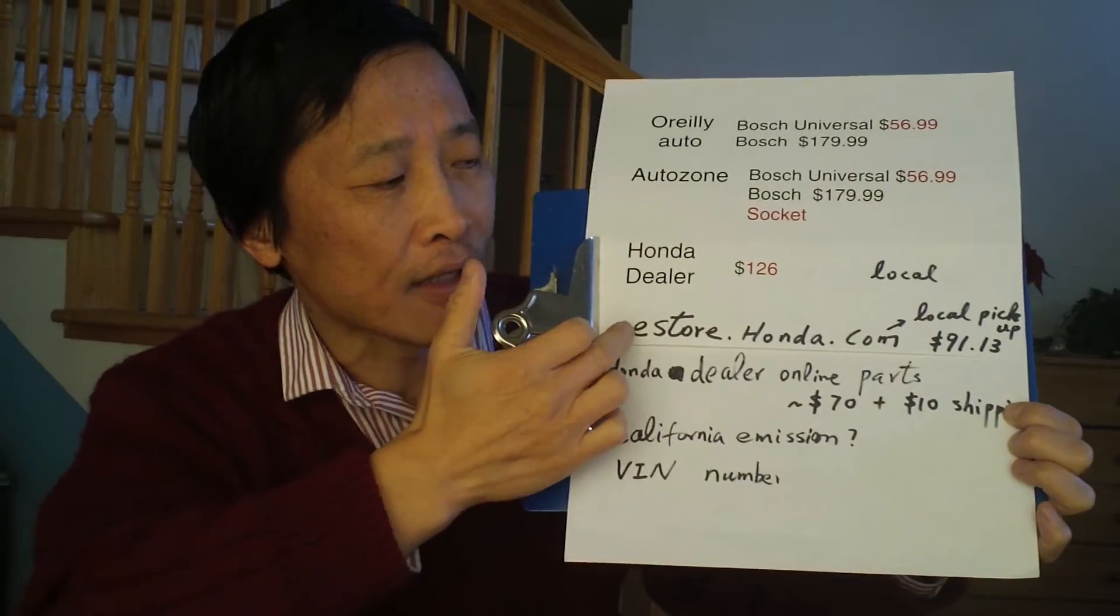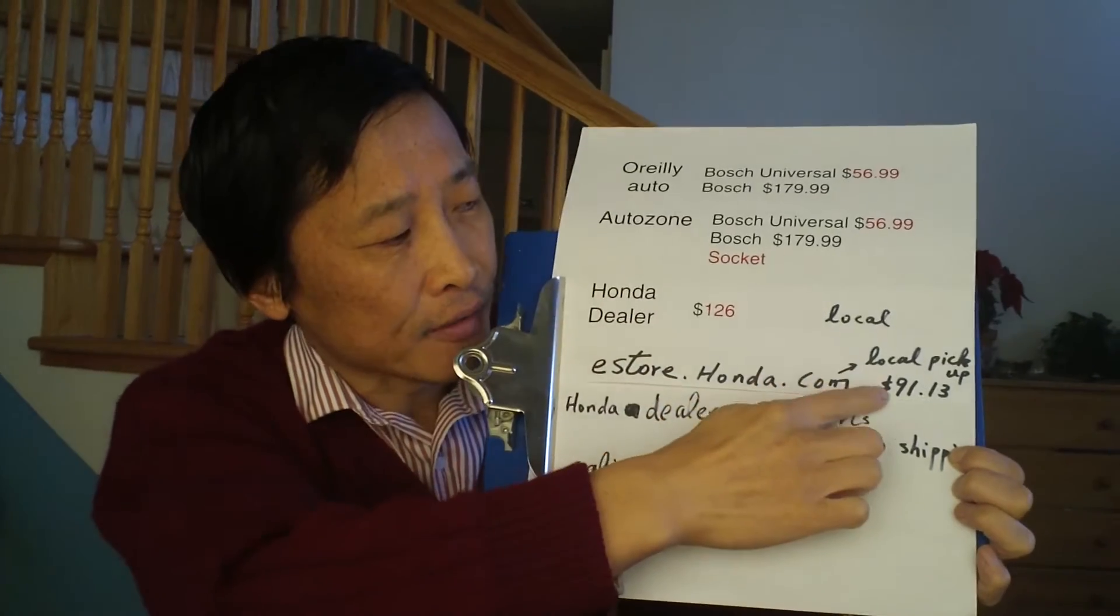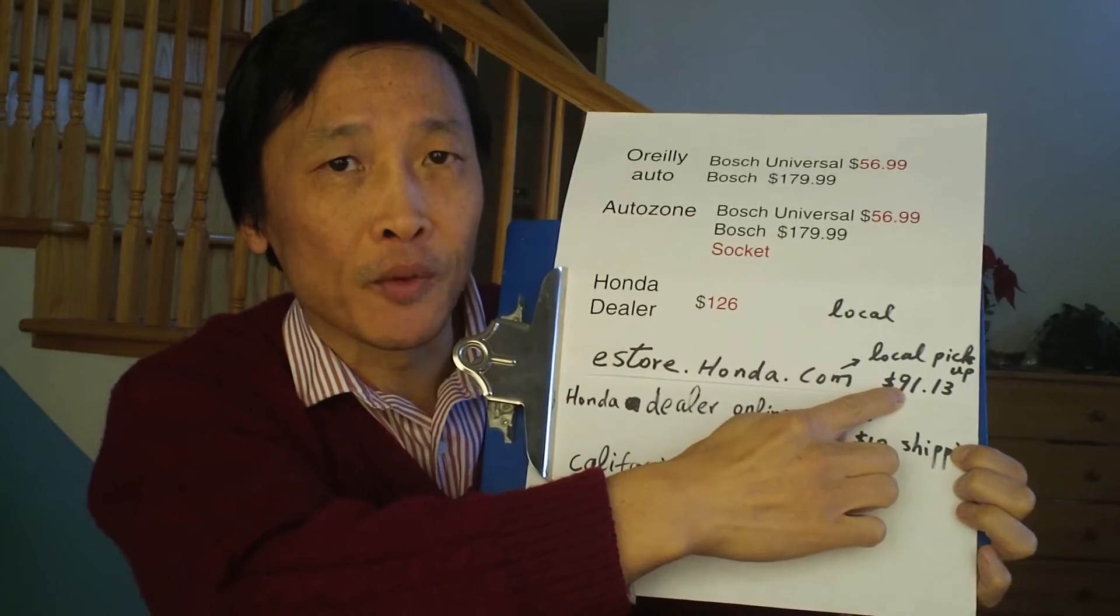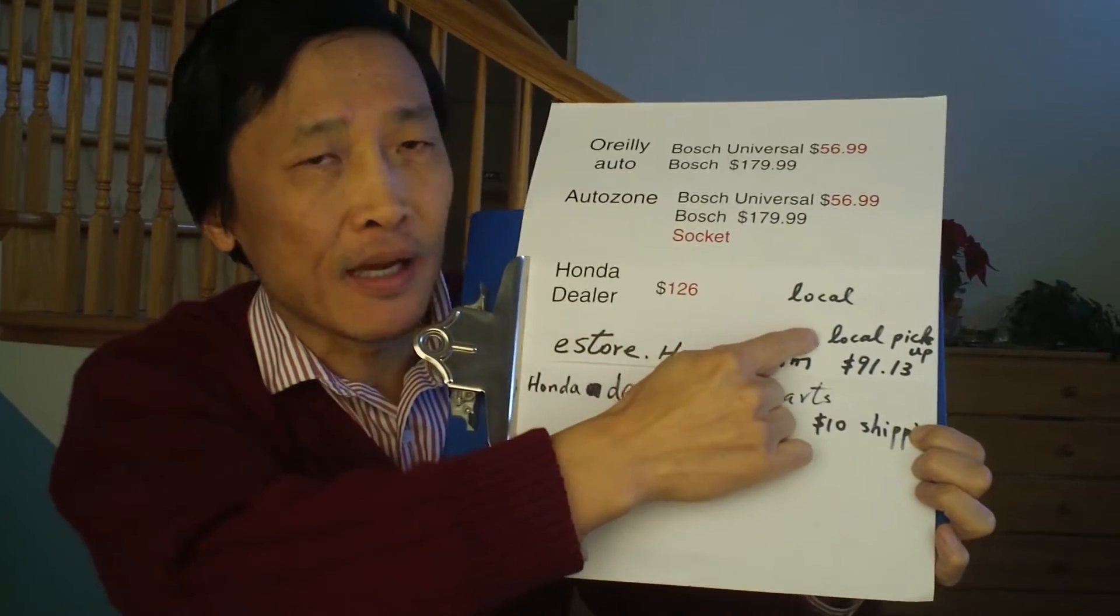So the second, you go to a Honda's website called e-store.honda.com. It's $91. You specify pickup from your local dealer. So you purchase from the website, but pickup is local, which is cheaper.